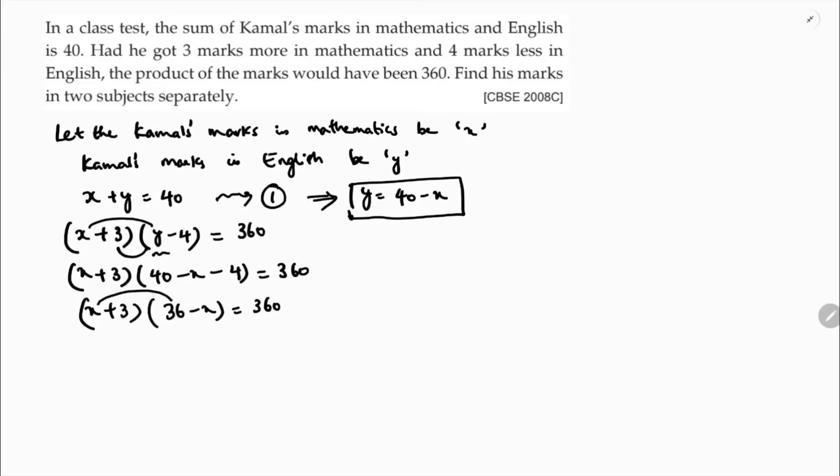Now multiply: x into 36 is 36x, 3 into 36 is 108, minus x squared minus 3x equals 360. 36x minus 3x is 33x minus x squared plus 108 equals 360.